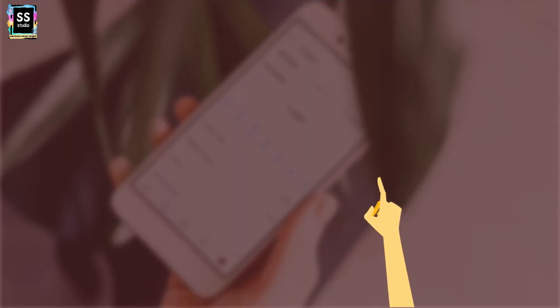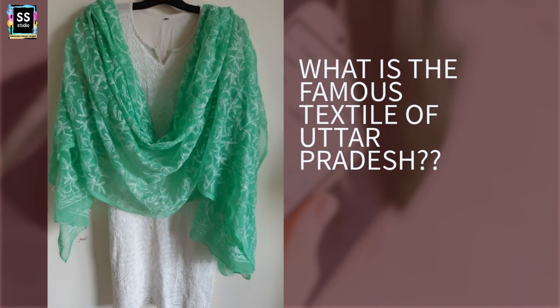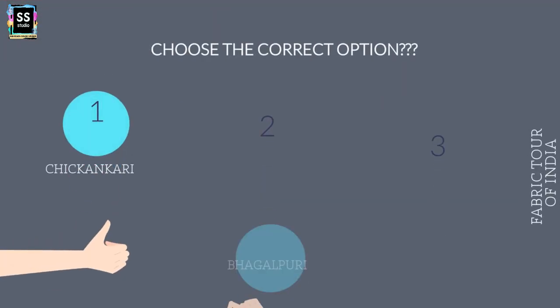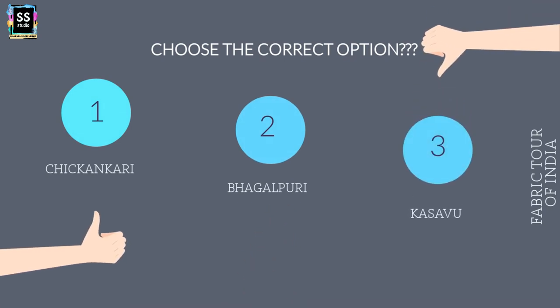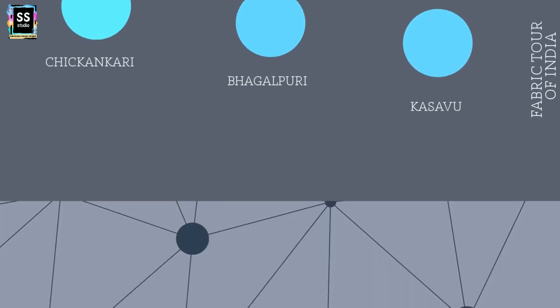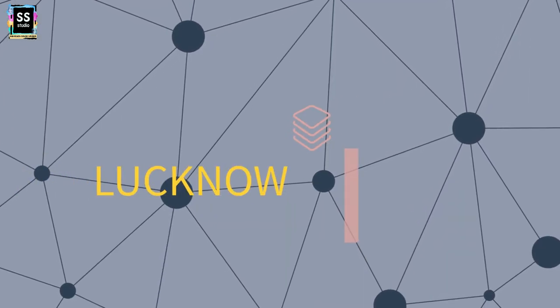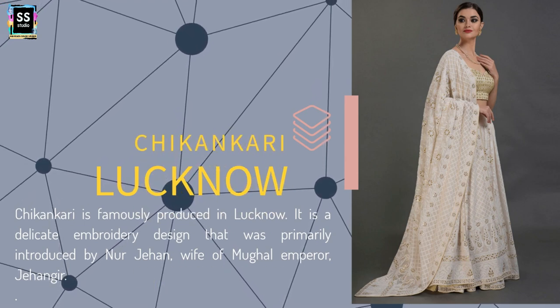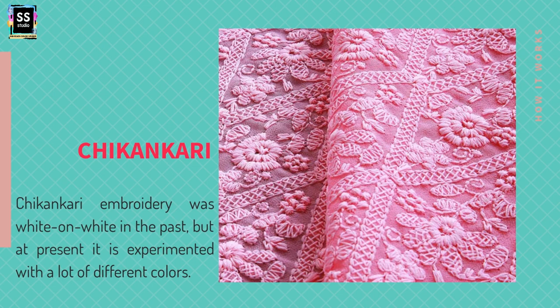State 15: Which is the famous textile of Uttar Pradesh? As the picture suggests — same colour fabric with white colour thread — is it Chikankari? Is it Kassavu? Or is it Bhagalpuri Silk? It is Chikankari from Lucknow. It is a delicate embroidery design introduced by Noor Jahan, wife of Mughal Emperor Jahangir. This cloth is now available in different colours. I hope this session has helped you a lot.